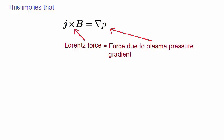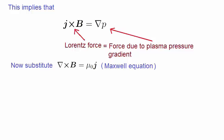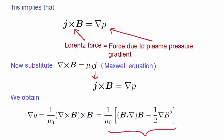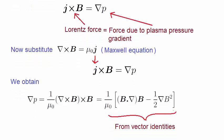Now let's substitute into it this Maxwell equation. We replace J by the Maxwell equation and rearrange, and we end up with this. The two cross products can be simplified to this term. This is obtained from vector identities that you can find in any vector calculus book. Let's rearrange this equation as follows.